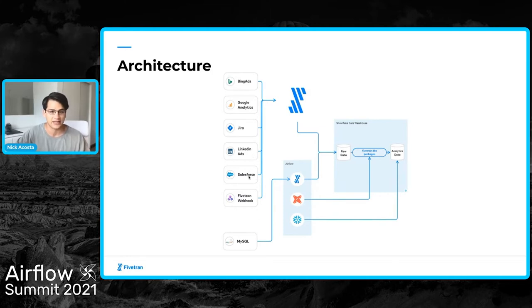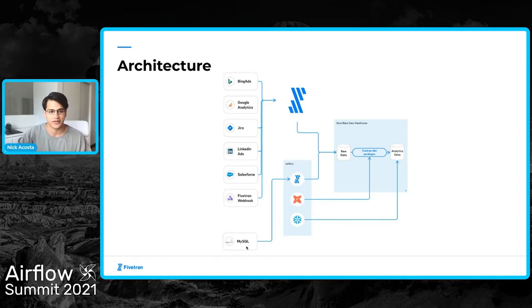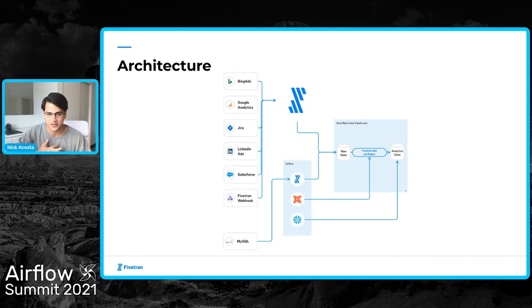For six of these seven sources, they're just using Fivetran as-is, running them out of fivetran.com without any unique setup or customization. But for one of their data sources, they're bringing it into Snowflake by orchestrating those Fivetran jobs in Airflow — and not just any data source, but their production database. They're replicating that in their data warehouse. It's their largest data source, the most data that they're pushing into Snowflake, and arguably their most important data source.